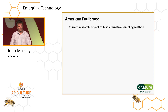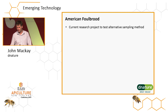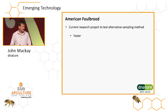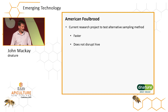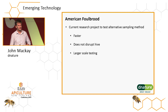So what we have going on at the moment is a current research project to look at testing alternative sampling strategies compared to the gold standard, which is testing nurse bees. Our thinking is that this will be faster, it won't disrupt the hive, you won't have to open the hive, and it will allow for larger scale testing — because there's only so many bees we can jam into a tube for composite testing.